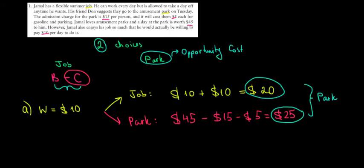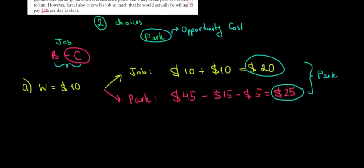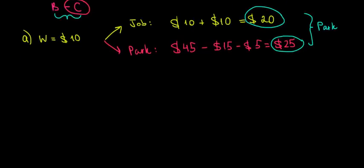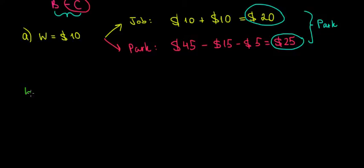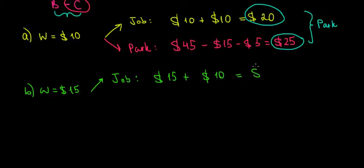Now let's look at the other option. What if the salary at that job is gonna be $15 per day? So now the wage is $15, which means that at the job we are getting $15 from our salary plus $10 from our own happiness of doing it. So that would be worth $25 in total.